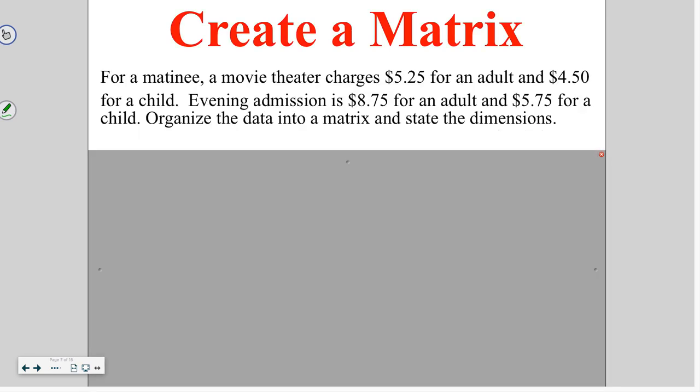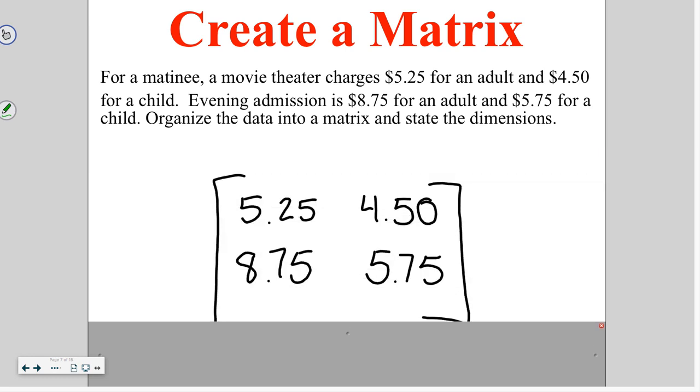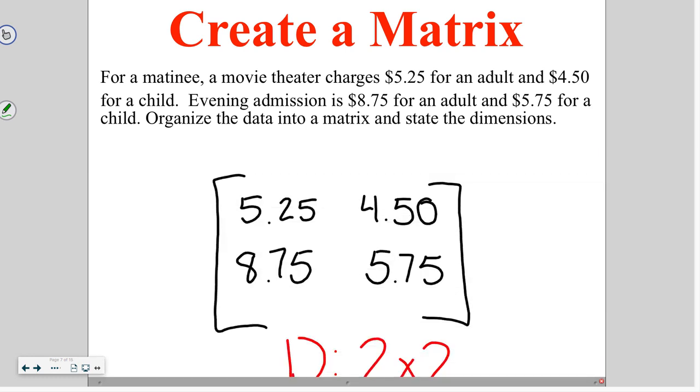Go ahead and draw a matrix for this one on your own. When you are done, just type done into the answer box and check your answer. So we've got our matrix and it ends up being a two by two matrix. If you have questions about how to organize these, please let me know when you get to class.